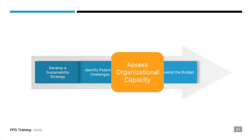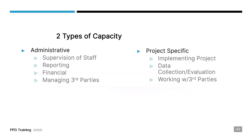Assessing organizational capacity. Organizational capacity is a critical component of project implementation. You must be able to demonstrate that your tribe or nonprofit organization and any staff involved have the capacity to successfully carry out the project. There are two types of capacity that will be needed to implement a project.